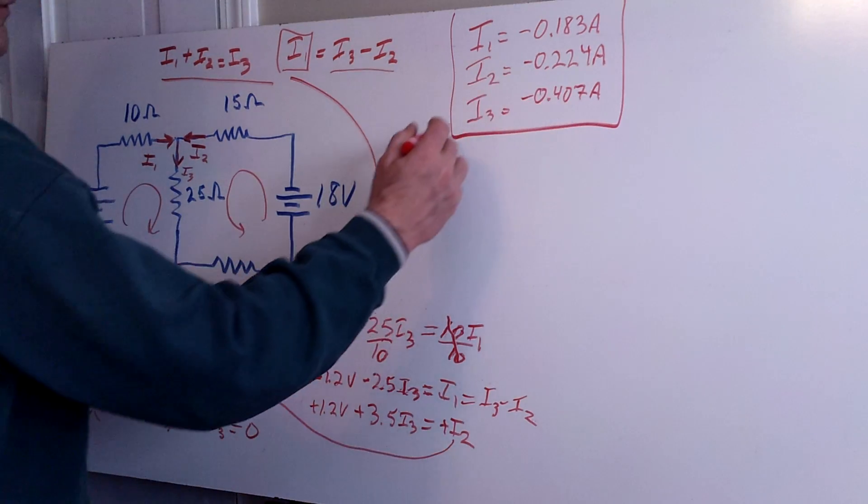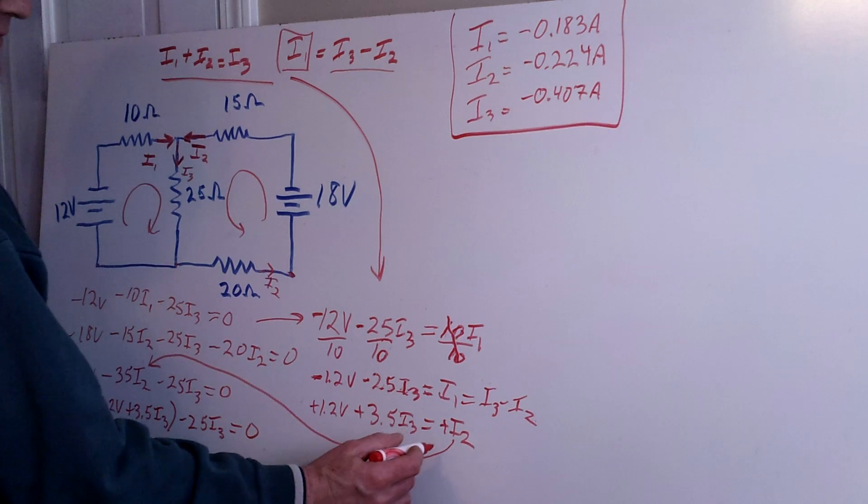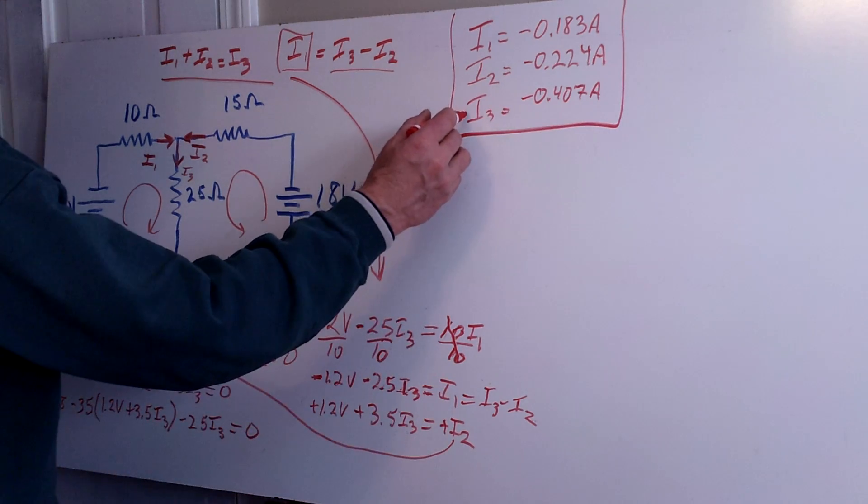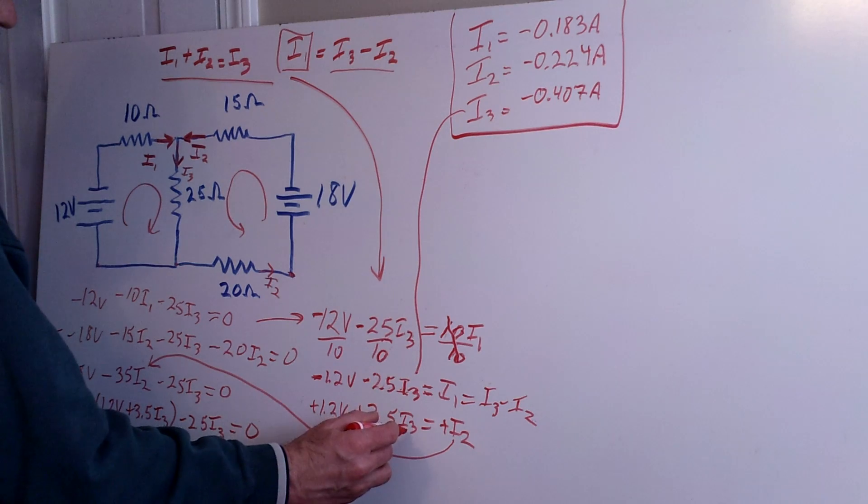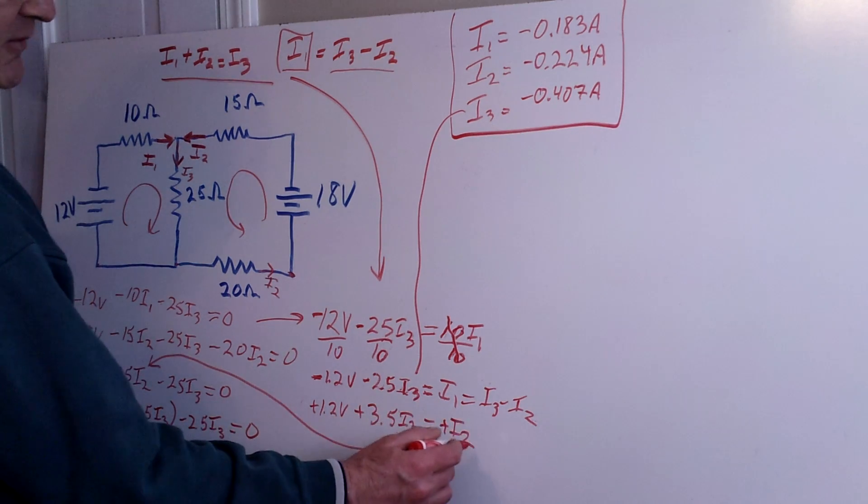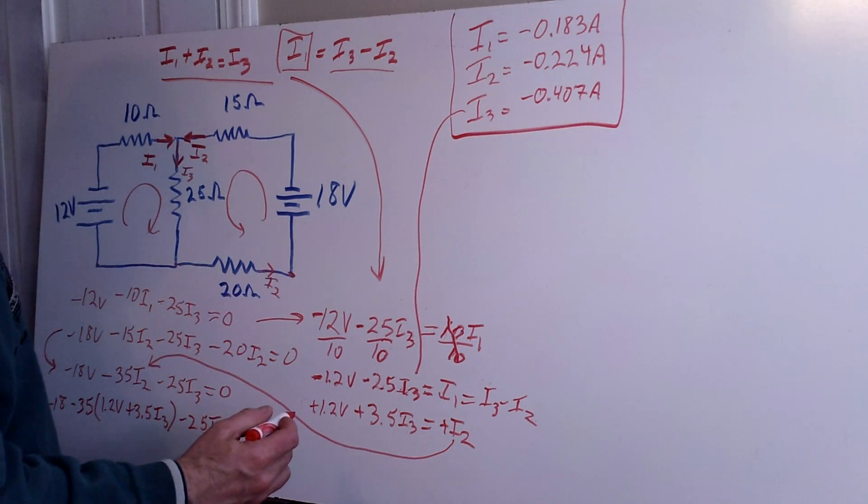And so once I have that solution, then I go ahead and I take it and I plug it into this equation right here where I have I3 and I2. So by plugging this solution into my equation for I3, I'll then be able to generate my value for I2, which will give me 0.224 amps there.